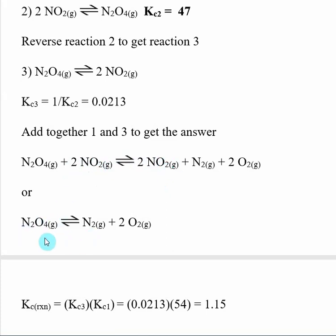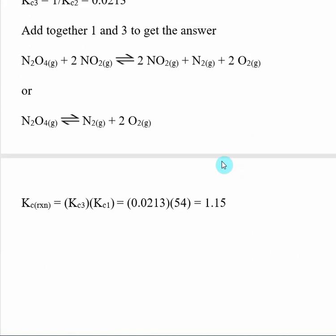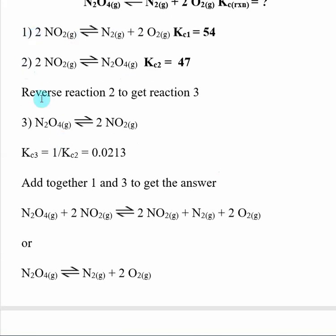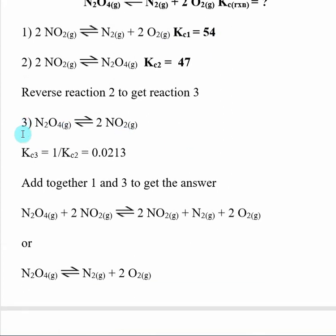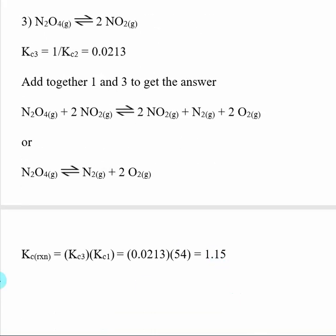Since I reached the target reaction by adding reaction one and reaction three, the K value is the product of KC1 and KC3. KC1 was given as 54, and KC3 was found by reversing reaction two, giving 0.0213. Multiplying those two together gives the equilibrium constant for the target reaction: 1.15.